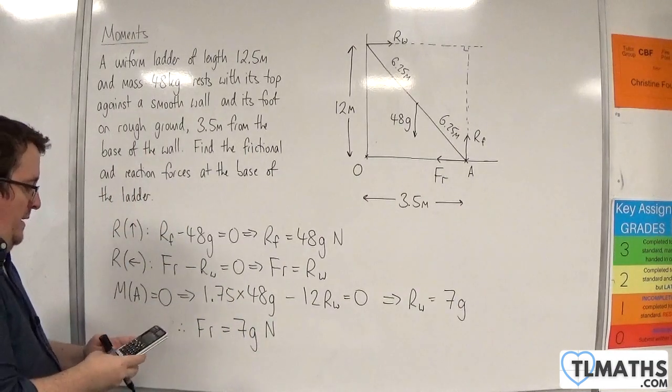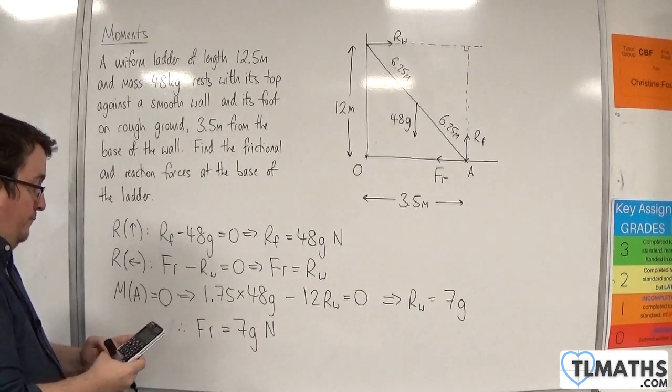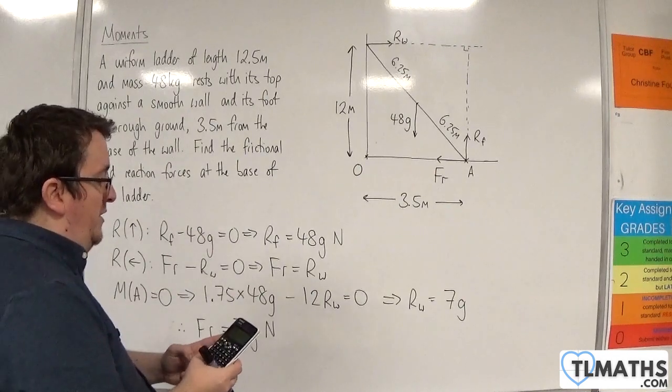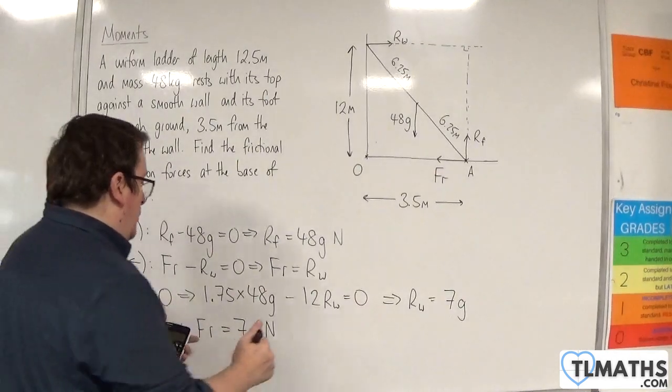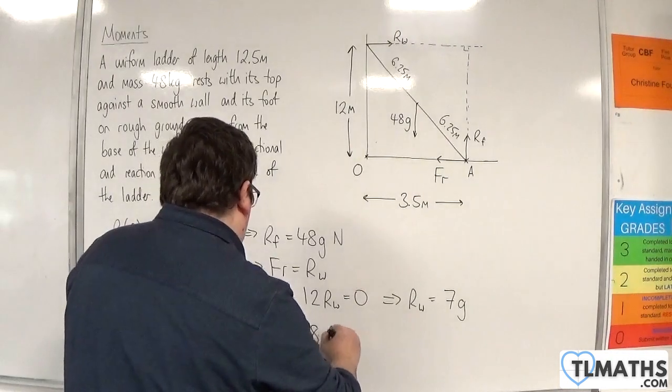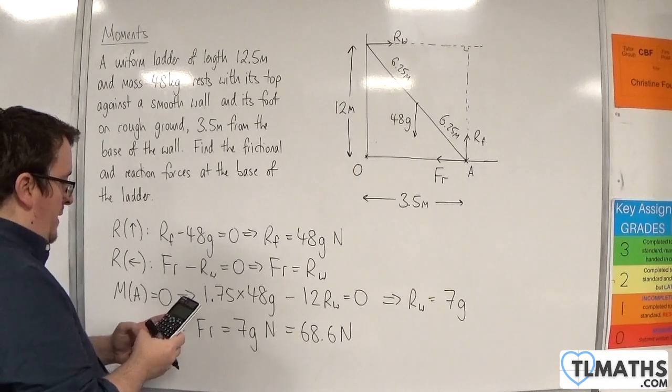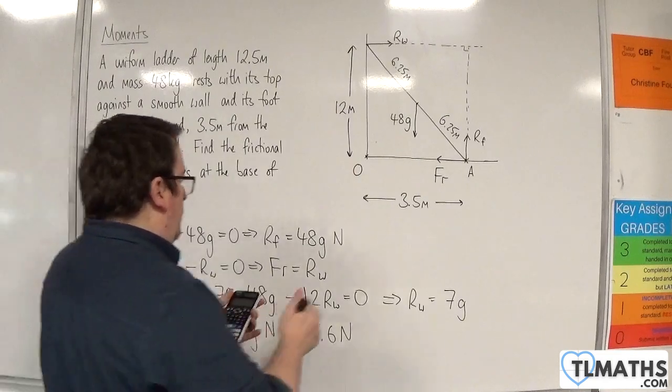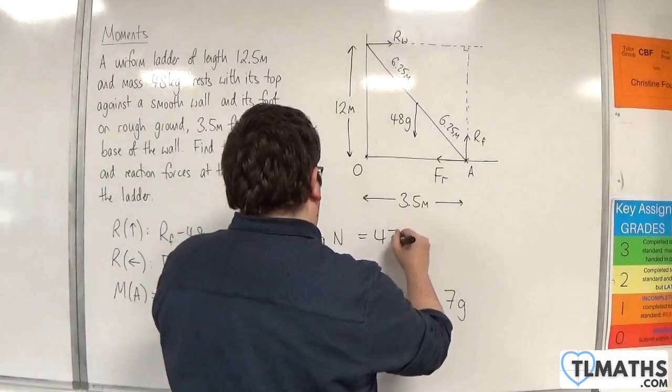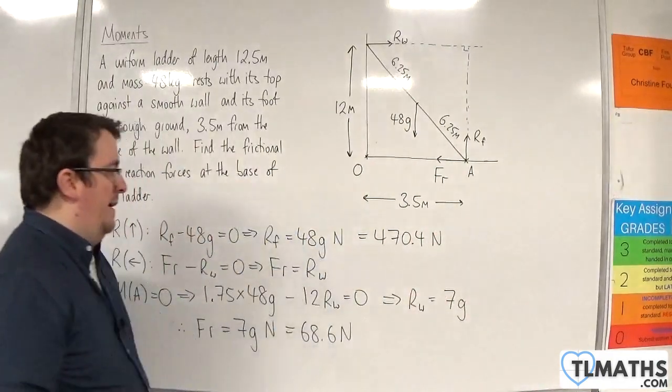Now if you want to put G as 9.8 in, then you're going to get 68.6 Newtons there, and 48 times 9.8 is 470.4 Newtons there.